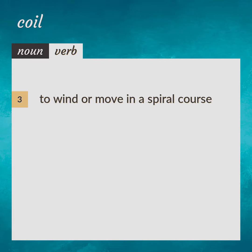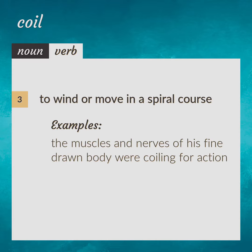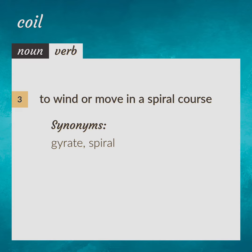To wind or move in a spiral course. Example: The muscles and nerves of his fine-drawn body were coiling for action. Synonyms: gyrate, spiral.